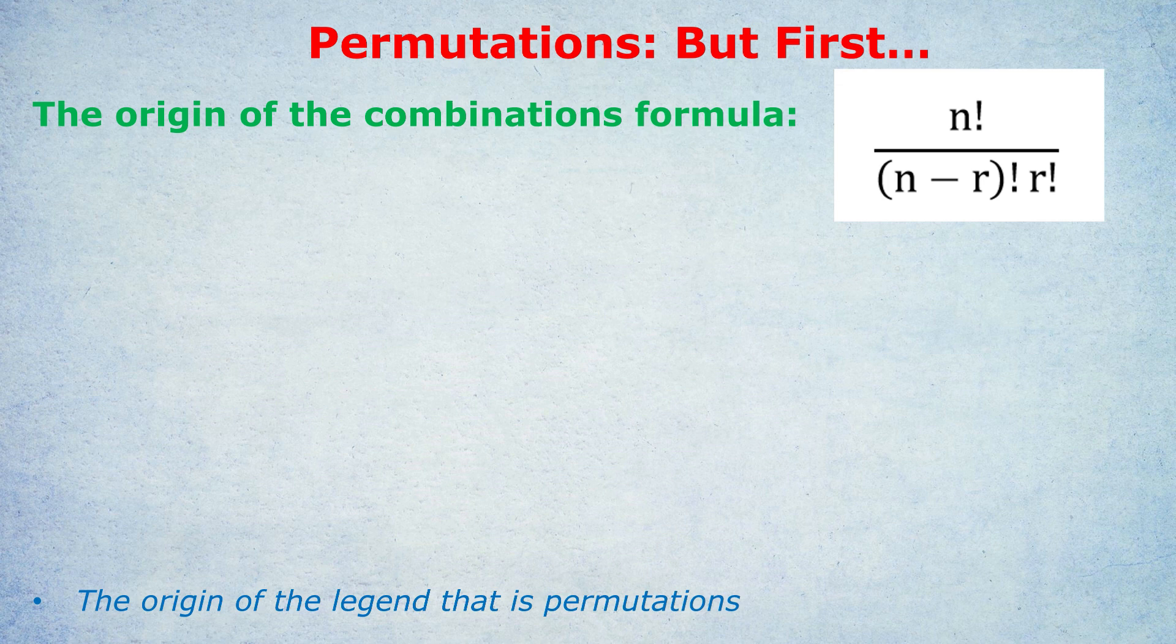So that formula that I told you in a different video, how to do combinations, I just gave it to you. But now we're going to explore it in a bit more depth. It's that one where we have a total, N, and we're selecting a certain number of people, R, using the formula on the top right of the screen. But where did that come from?